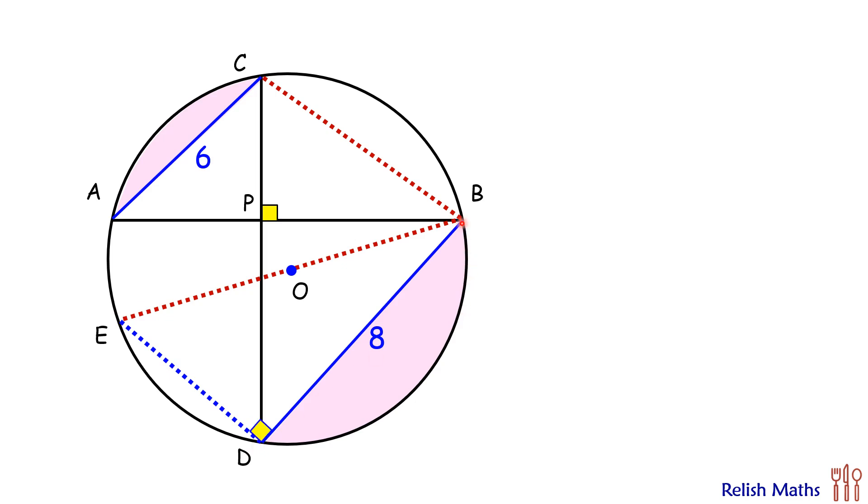If we concentrate on chord BD, we know that a chord sustains equal angles on the same side of the circle. Thus, if angle BCD, that is this angle, is alpha degrees, then angle BED will also be alpha degrees.